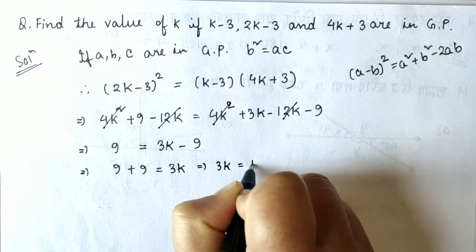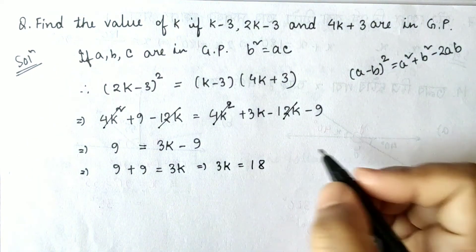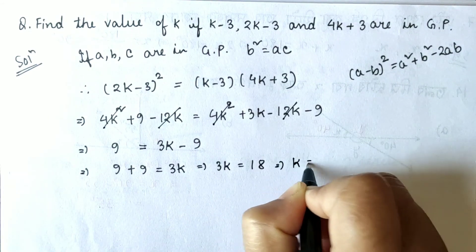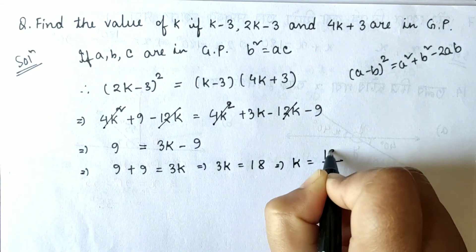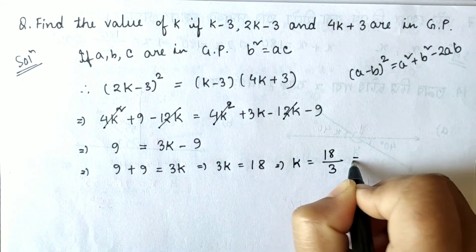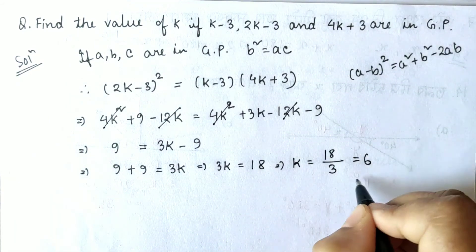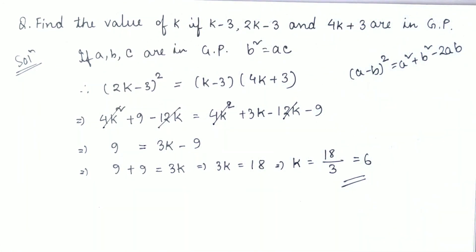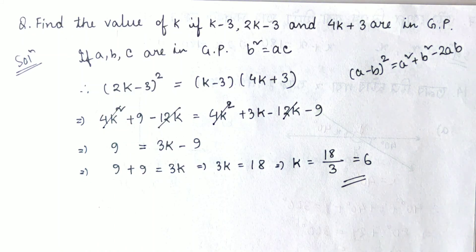So 9 plus 9 equals 3k, meaning 3k equals 18, therefore k equals 18 divided by 3, which equals 6. The value of k is 6.